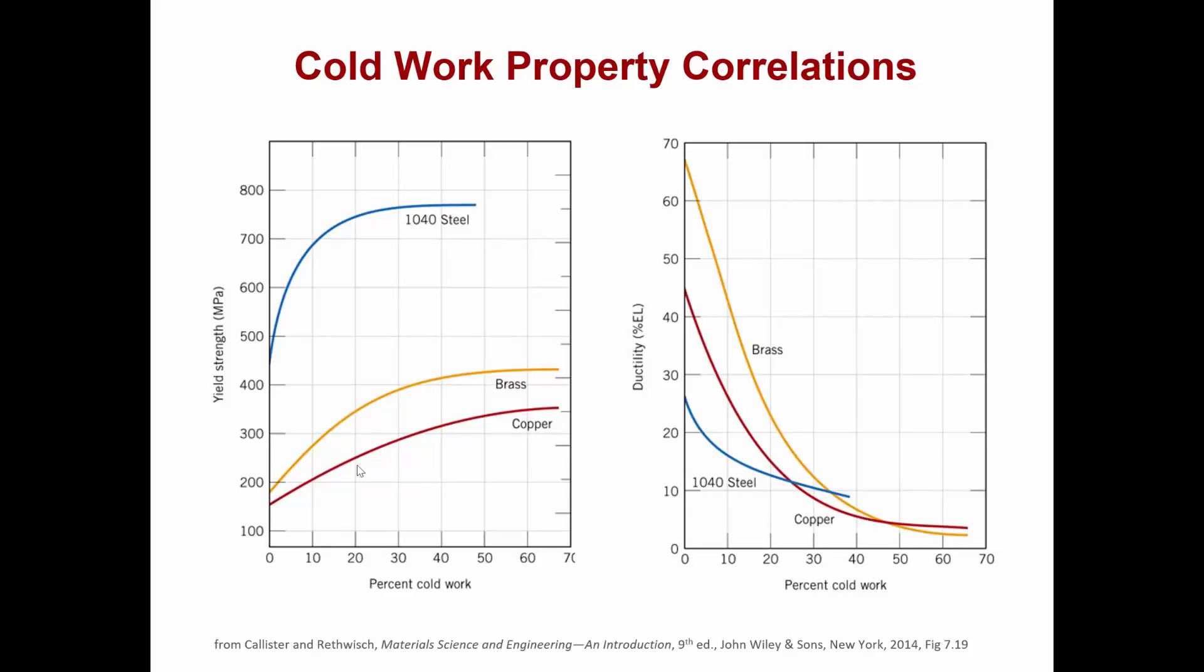We could then take a look at our property correlation graphs. If we go to 50 percent cold work and go up to the copper curve and then come across, we would have a yield strength of about 340 megapascals.